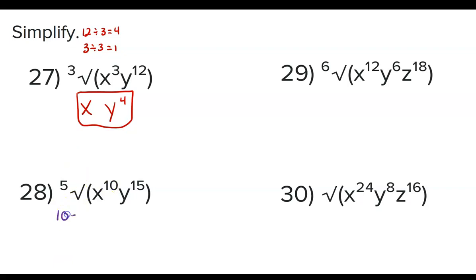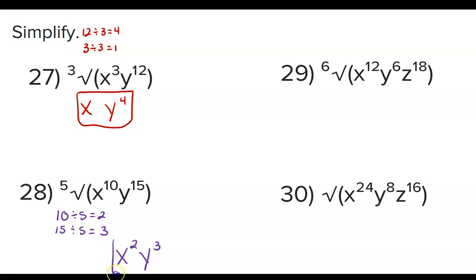Problem 28: divide the exponents by the index. 10 divided by 5 is 2, and 15 divided by 5 is 3. So this would be x squared times y cubed, or x²y³. Whatever the index is, that's what you divide by when working with exponents inside a radical.